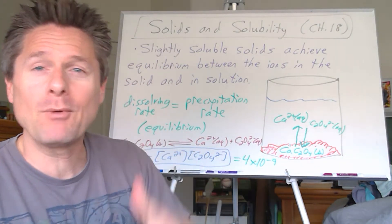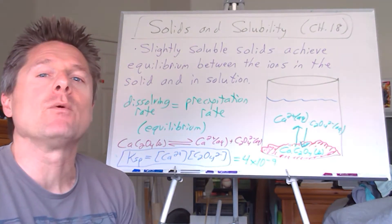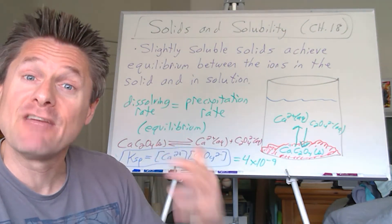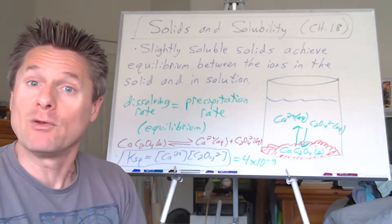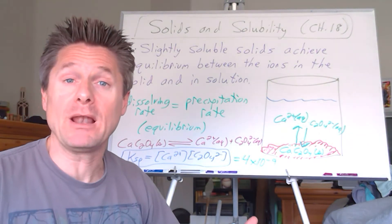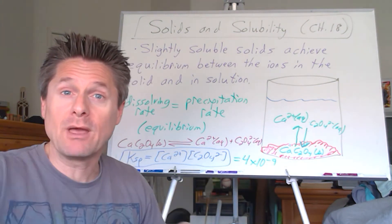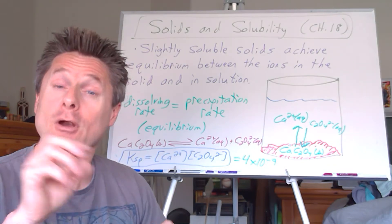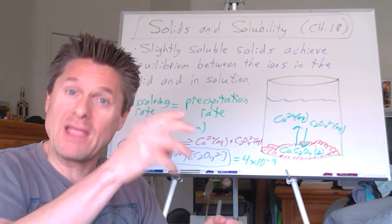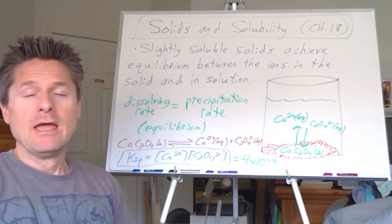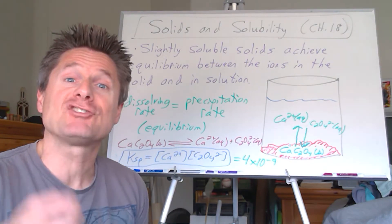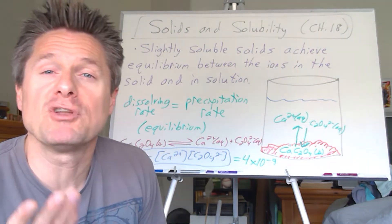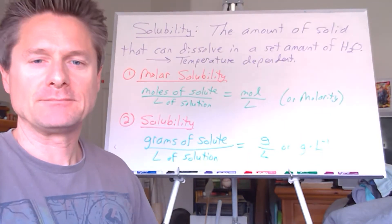Now let's define solubility quantitatively. We'll be able to do two types of calculations: if we know the solubility of a solid — measured as grams that dissolve in one liter — we can back-calculate the Ksp experimentally. Conversely, if we know the Ksp from the table — ideally thermodynamic values using activities, but we'll use molarities in lecture — we can use an ICE table to theoretically calculate the solubility. Of course, solubility is temperature dependent, which we'll revisit in the thermodynamics chapter.